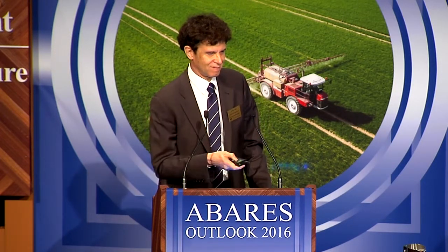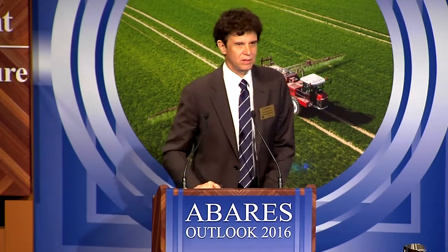So here's the answer. If you allocate according to the portfolio rule, you would have more or less equal shares in prevention and surveillance — you wouldn't dump everything into prevention. The eradication share would still be fairly large even though its original benefit-cost ratio is small. Much different than just allocating by benefits and costs.